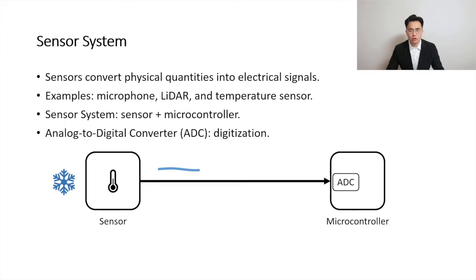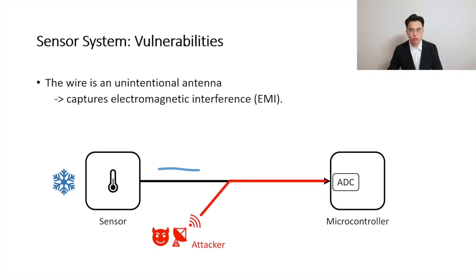Sensors are highly integrated into our lives, and hence it is essential to be concerned with the security and correctness of sensor measurements. Without any authentication scheme, the microcontroller has no choice but to trust the sensor measurement. The wire that connects the sensor to the microcontroller is an unintentional antenna, which is sensitive to electromagnetic interference, or EMI. An attacker can use EMI to remotely inject an attacking signal into the sensor system and change the sensor output. If the microcontroller includes incorrect measurements in its control decisions, it could have disastrous consequences.